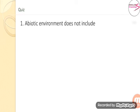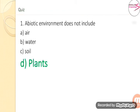Question 1: A biotic environment does not include? Option A: Air. Option B: Water. Option C: Soil. Option D: Plants. The correct answer is option D — Plants. Plants are biotic, not abiotic, so the abiotic environment does not include plants.